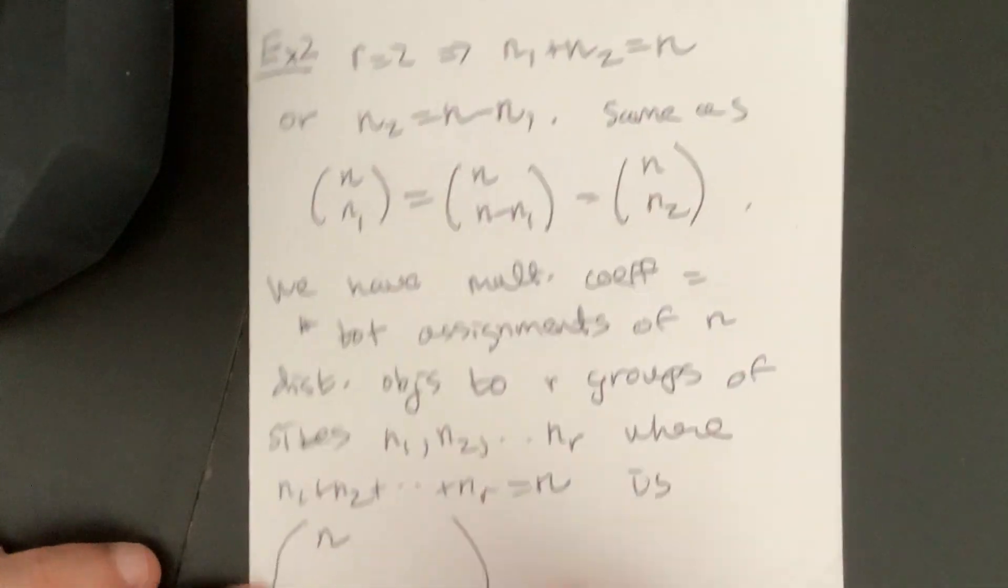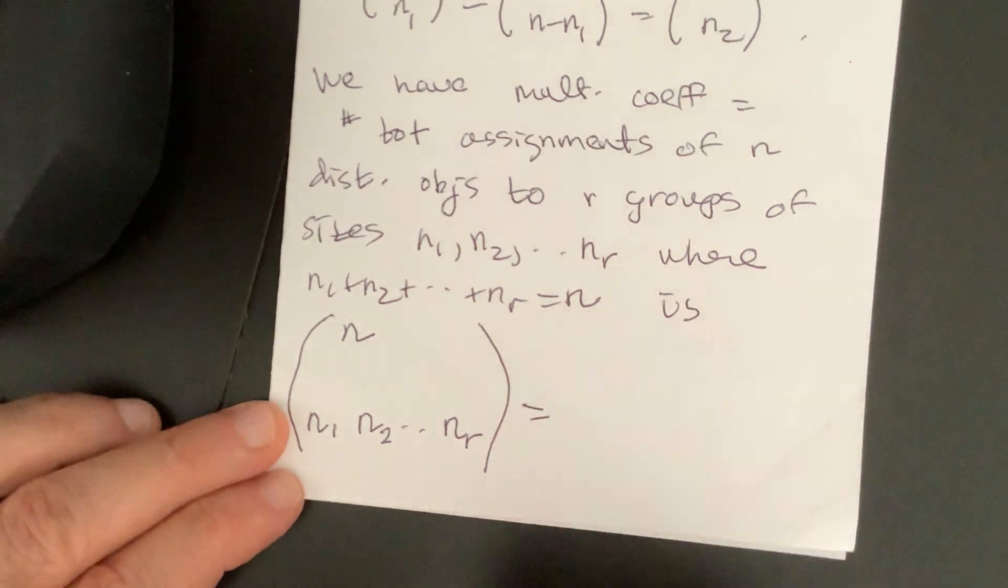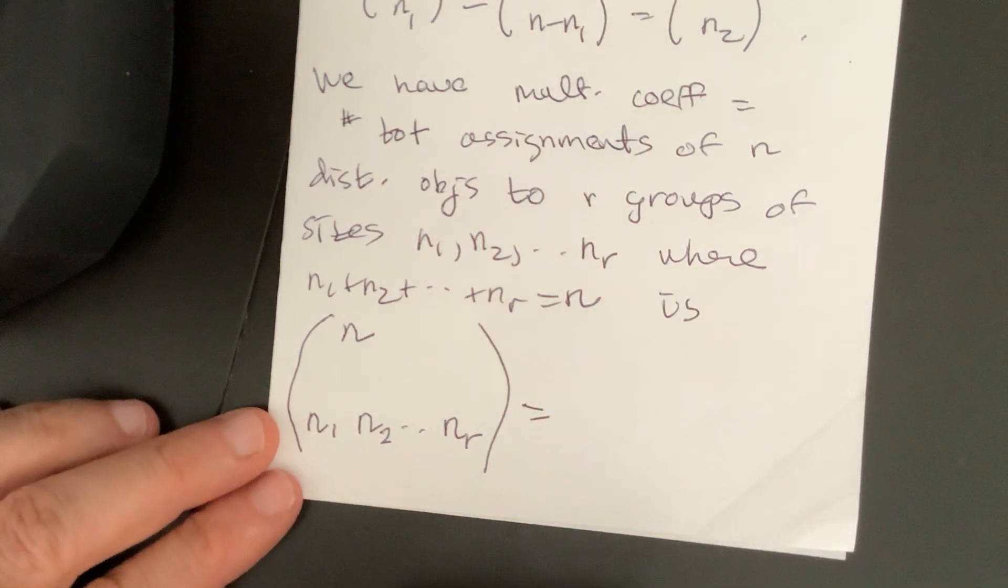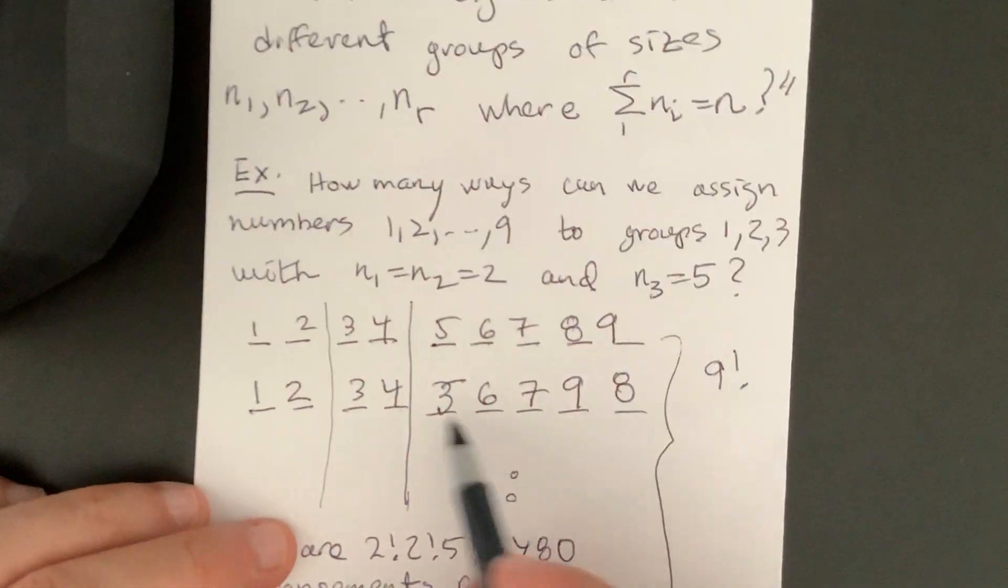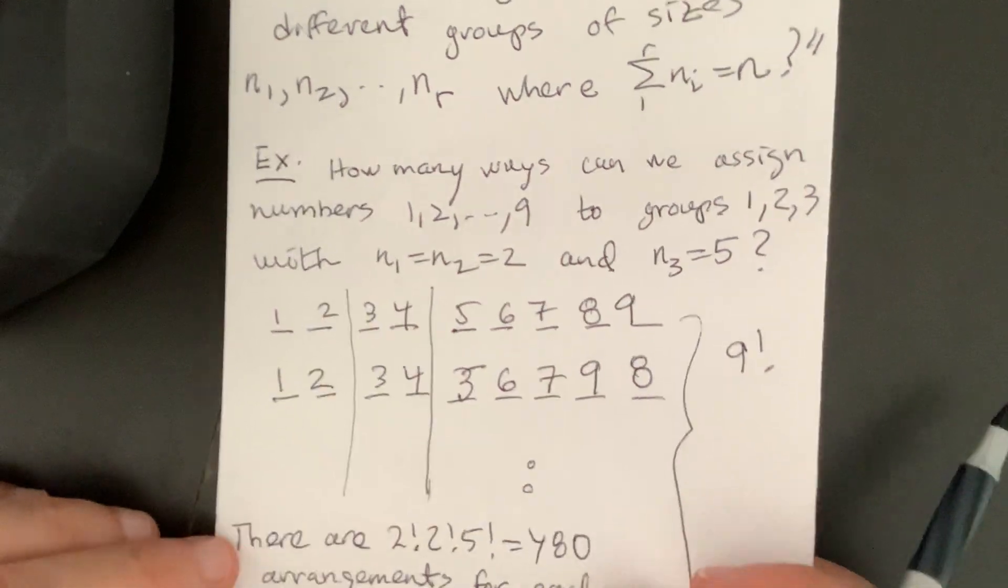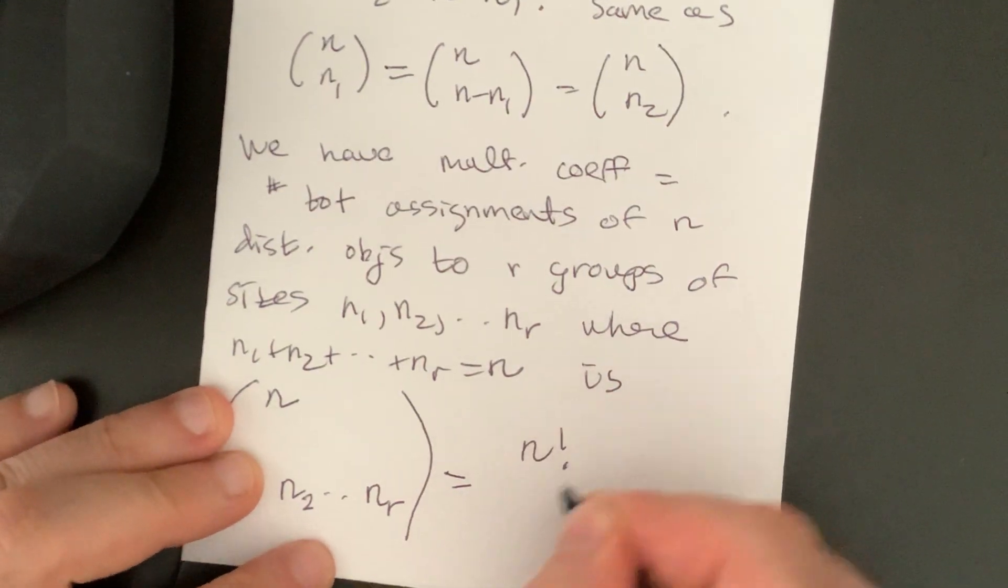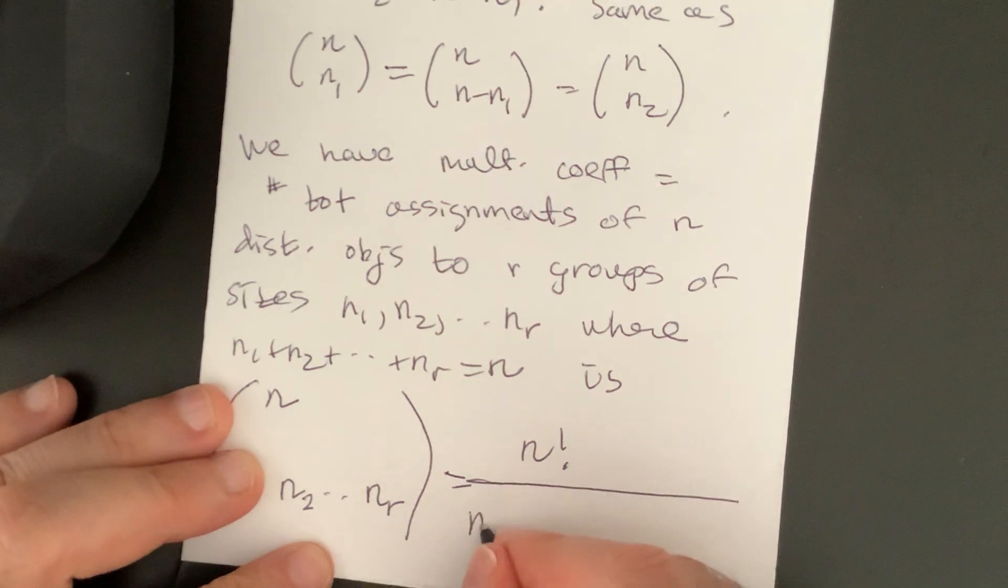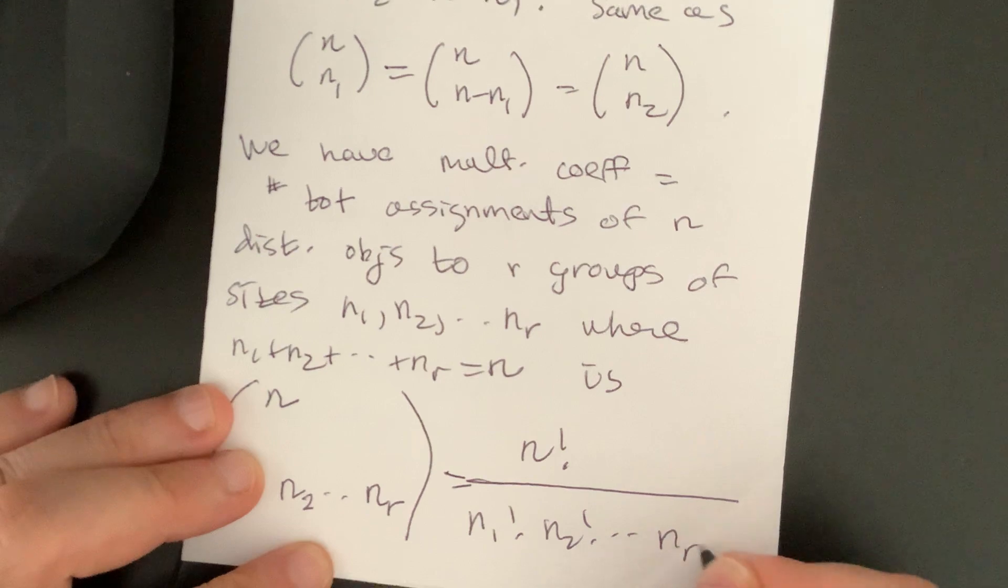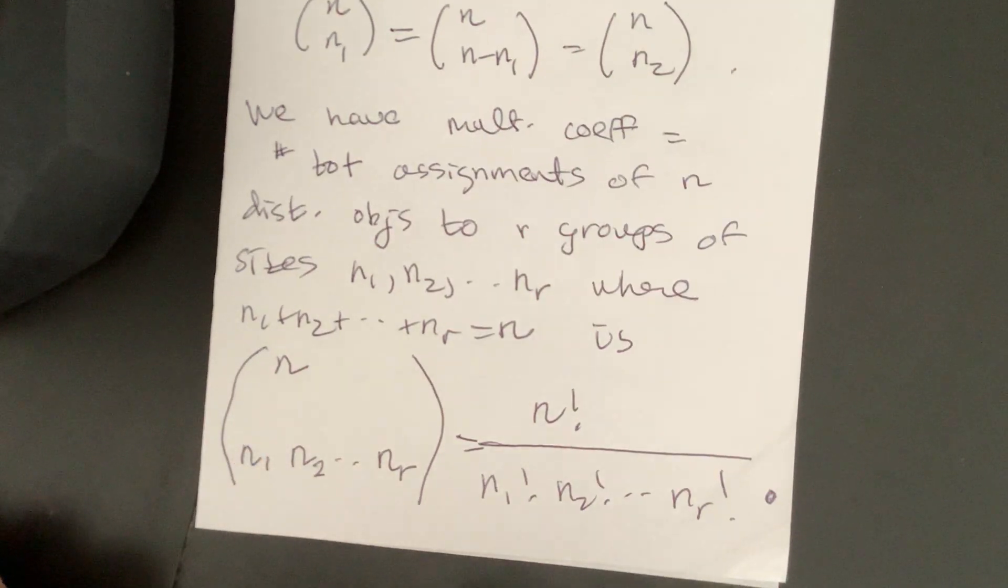And the formula, oh my God, and the formula is pretty much what you guessed. It's just like the Mississippi problem, right? We arranged things and then we divide out by the number of arrangements within each group. So should be n factorial and it is n factorial over n1 factorial n2 factorial dot dot dot nr factorial. Okay, that's called the multinomial coefficient.